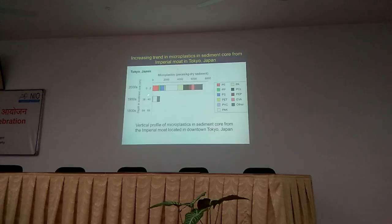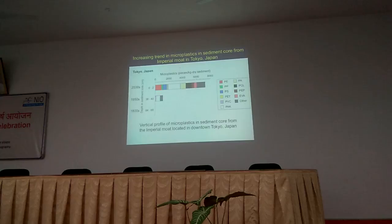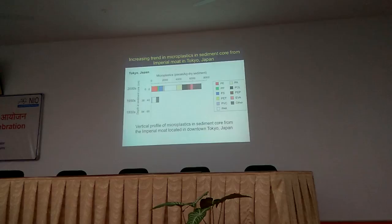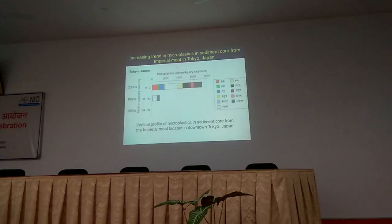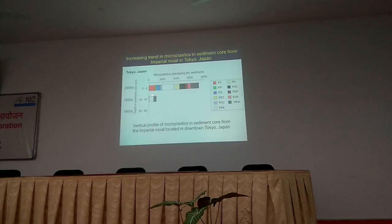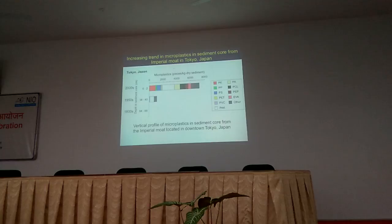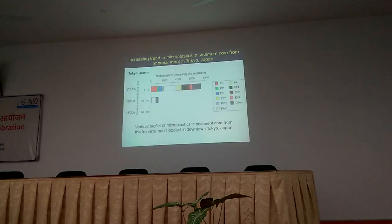At that time, Japan started to produce plastics, therefore we found some. And after that, our plastic production increased dramatically. Corresponding to that, we found large numbers of plastic in the surface layer in the late 2000s. This means plastic pollution is increasing and getting serious.